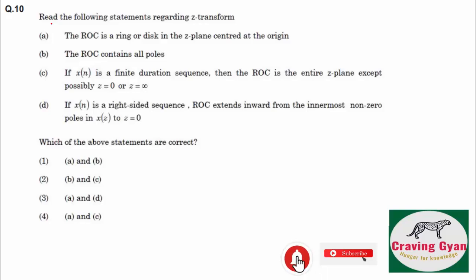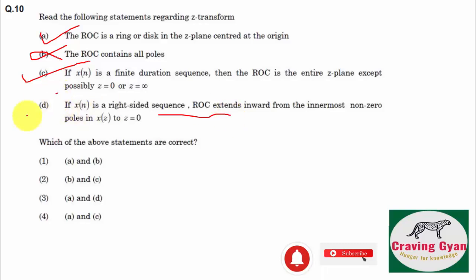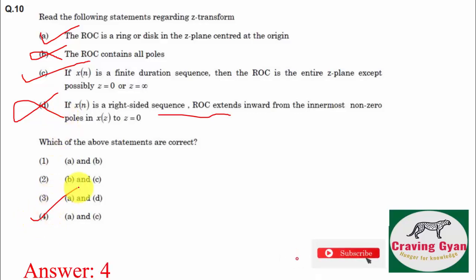Tenth question: opt for correct statements about the ROC. Statement 1 — the ROC is a ring or disc in the Z-plane centered at origin — yes, it has unit radius. Statement 2 — the ROC contains all poles — no, ROC should not contain poles. Statement 3 — ROC are lines parallel to the jω axis — this refers to the Laplace domain. Statement 4 — if X(N) is finite duration, the ROC is the entire Z-plane, possibly excluding Z=0 or Z=∞ — true. Statement 5 — if X(N) is a right-sided sequence, ROC extends inwards — wrong. So A and C are correct, hence option number 4 is going to follow.